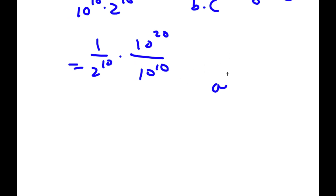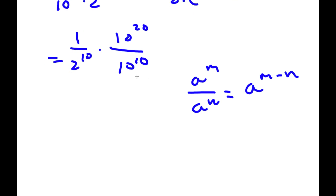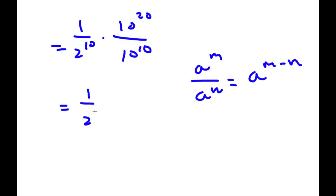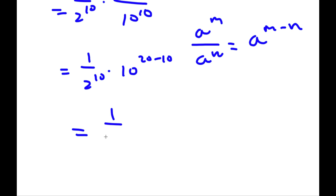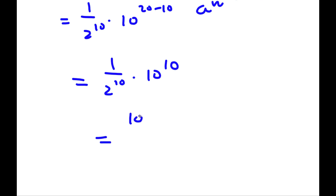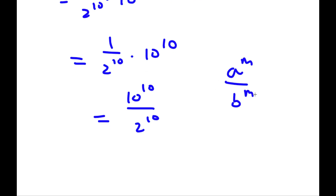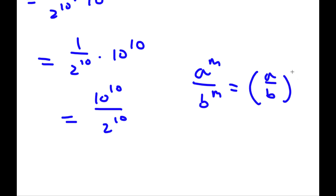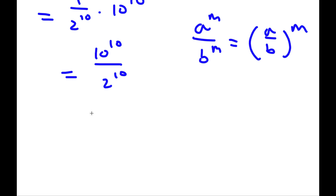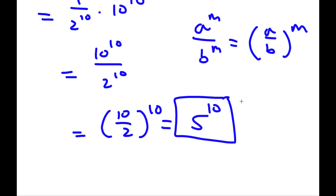Using the property a to the power of m over a to the power of n equals a to the power of m minus n, 10 to the power of 20 over 10 to the power of 10 equals 10 to the power of 20 minus 10, which is 10 to the power of 10. So I have 1 over 2 to the power of 10 times 10 to the power of 10, giving 10 to the power of 10 over 2 to the power of 10. Using the property a to the power of m over b to the power of m equals a over b to the power of m, this equals 10 over 2 to the power of 10. And 10 over 2 is 5, so my answer is 5 to the power of 10.